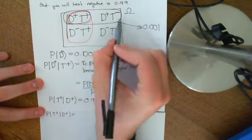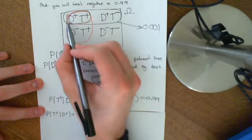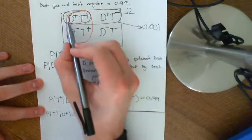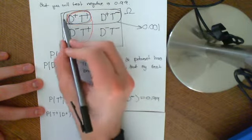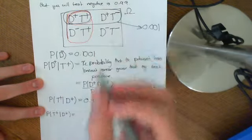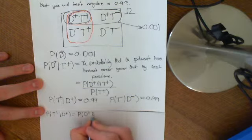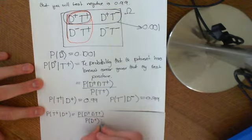So we know you're in the event of having the disease. And we're asking, what is the probability of this intersection when you view this event of being diseased as the entire sample space? So this is the probability of D plus intersection T plus, divided by the probability of D plus. Well, we know what the probability of D plus is — that's equal to 0.001.